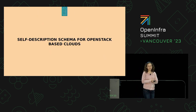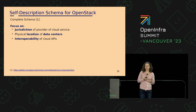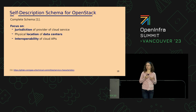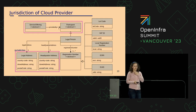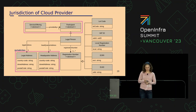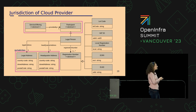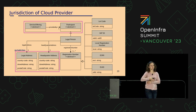How about the self-description schema for OpenStack-based clouds? The schema is very complex, so I'll focus on three important parts: the jurisdiction of the provider of the cloud service, the physical locality of the data center where the cloud service is hosted, and the interoperability of the API of the cloud. For jurisdiction, a service offering has a mandatory association to the participant who provides it. The participant can be a legal person, who has mandatory properties: headquarter and legal address. With those two pieces of information you can deduce the jurisdiction — which law may be applied to the data processed or stored in that cloud service.